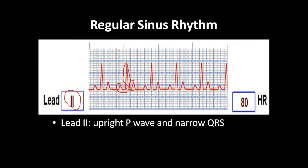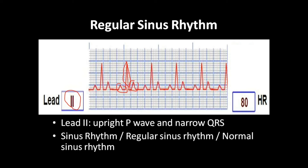In lead 2, we get an upright T wave and a narrow QRS complex. This is a feature of regular sinus rhythm. The regular sinus rhythm is also called a sinus rhythm, or a regular sinus rhythm, or a normal sinus rhythm. The pattern is a repeating P, QRS, and T wave, and it will repeat after a short isoelectric line.